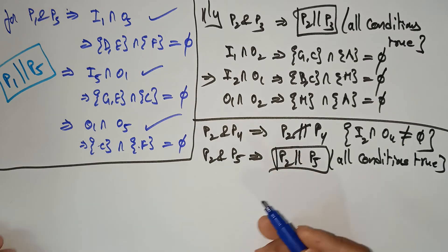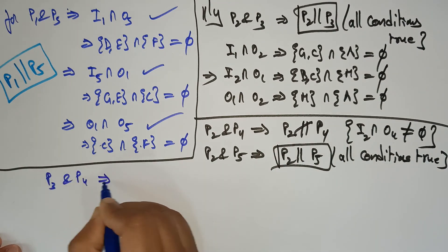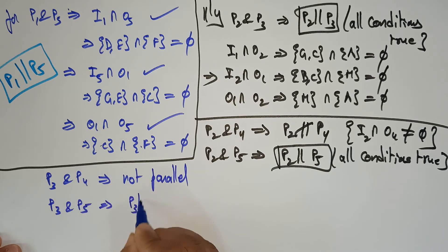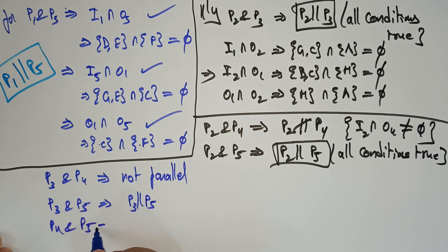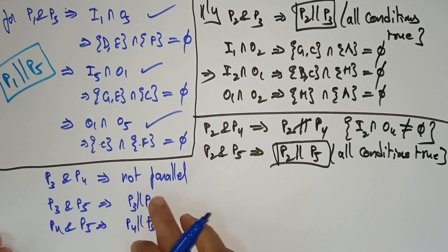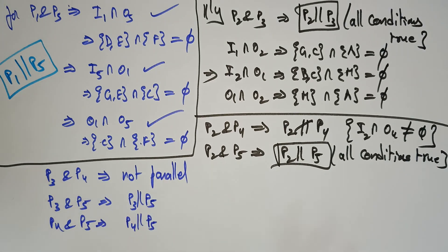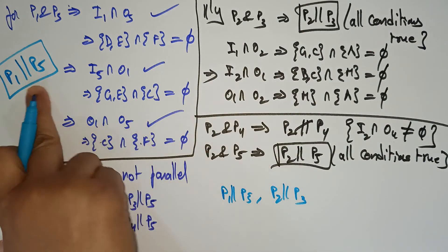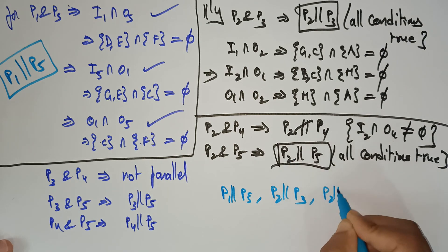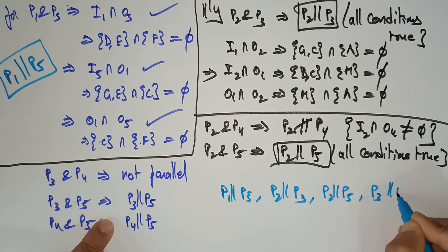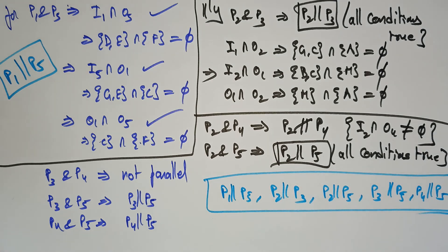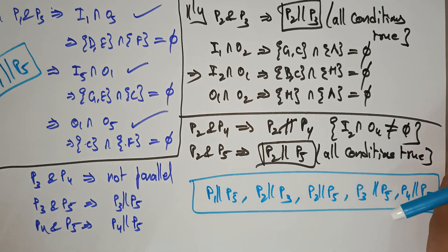Similarly, P3 and P4 are not parallel. P3 and P5 are parallel to each other. P4 and P5 are parallel to each other because all conditions are satisfied. So after checking all statement pairs, the final conclusions are: P1 ∥ P5, P2 ∥ P3, P2 ∥ P5, P3 ∥ P5, and P4 ∥ P5. These processes can execute in parallel.